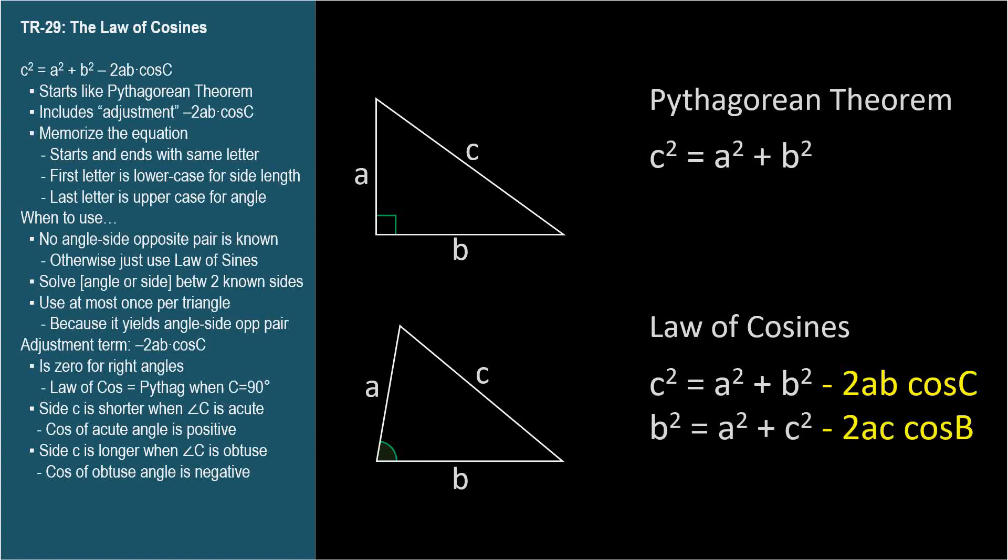Or b squared equals a squared plus c squared, minus 2ac cosine B. And finally, a squared equals b squared plus c squared, minus 2bc cosine A.